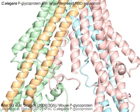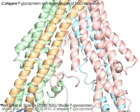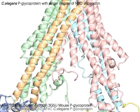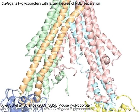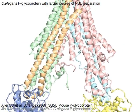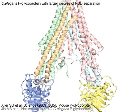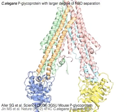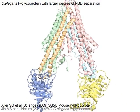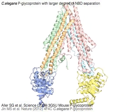The difference in the degree of NBD separation between mouse and C. elegans P-glycoprotein and SAV1866 may indicate the conformational change for transport.